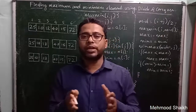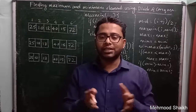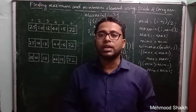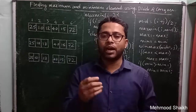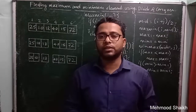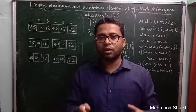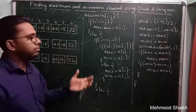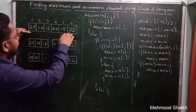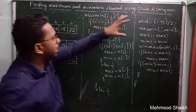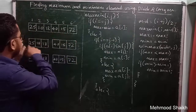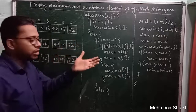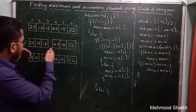Divide-and-conquer says: when you have a large problem and it is difficult to solve, divide that problem into two sub-problems. If you still feel that each sub-problem is difficult to solve, further divide each sub-problem into smaller sub-problems, and repeat this step until you are left with the smallest unit of each sub-problem.